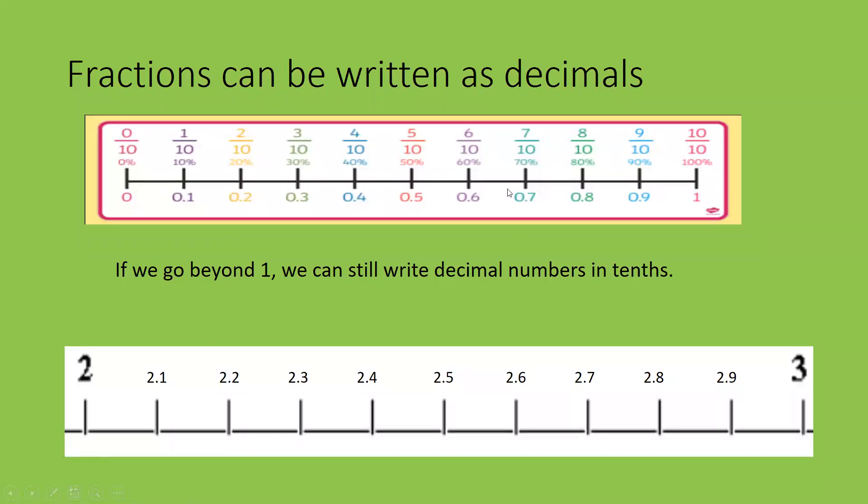Fractions can also be written as decimals. If we look at the fraction number line here, we start at zero, we end at one. If we count up in tenths, one tenth. One tenth is equivalent to 0.1. Two tenths is equivalent to 0.2, and so on. If we go beyond one, we can still write decimal numbers in tenths. So two, then 2.1, 2.2, and so on, all the way up to three.